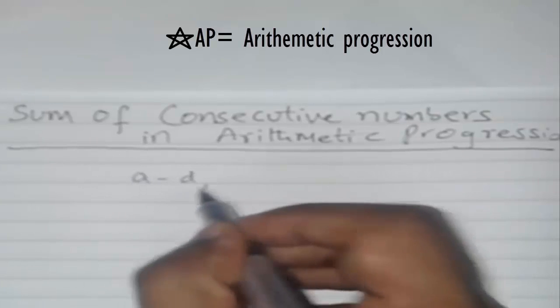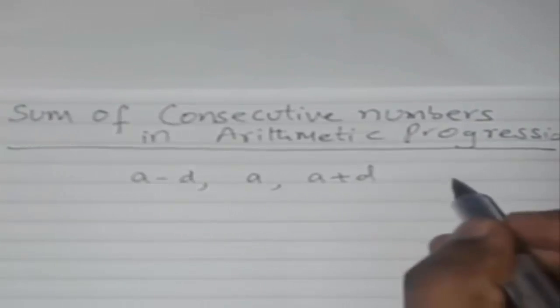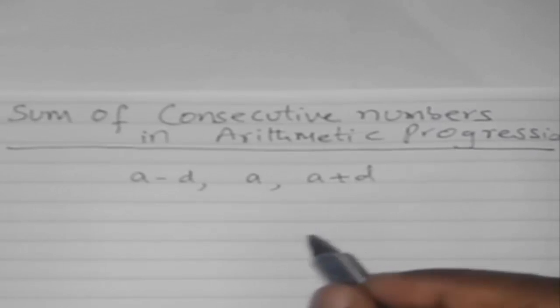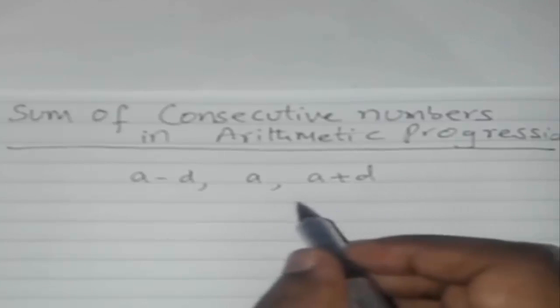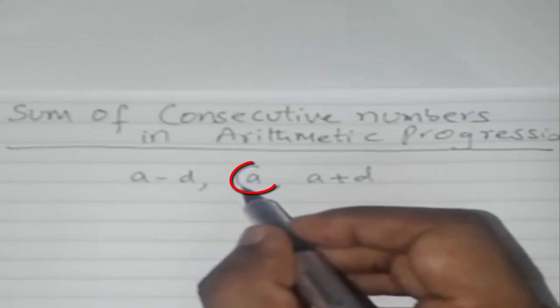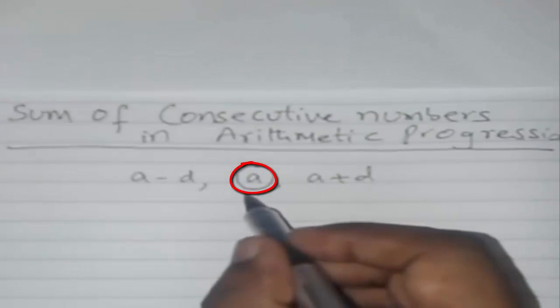So three is an odd number. The smallest odd number is one, so we should have center 'a'. Always remember, whenever we are finding the sum of consecutive odd numbers, the center should be 'a'.